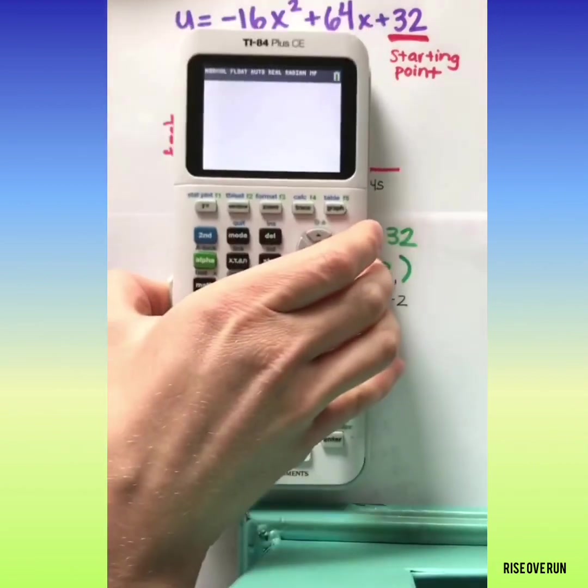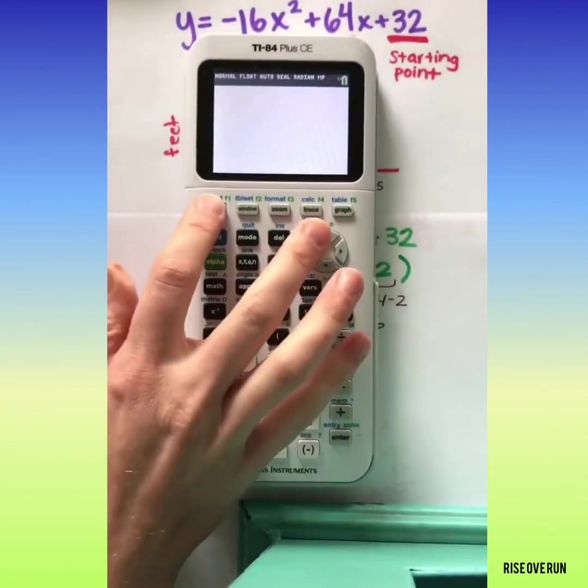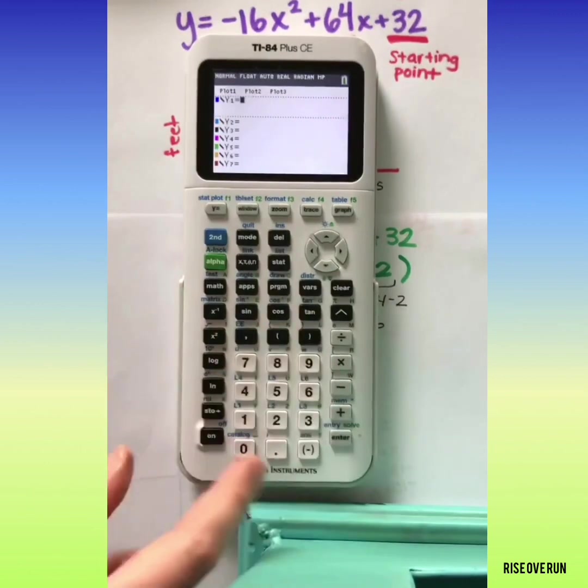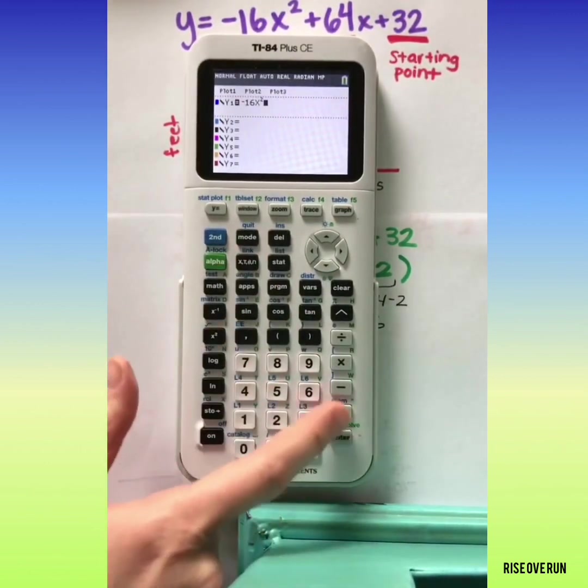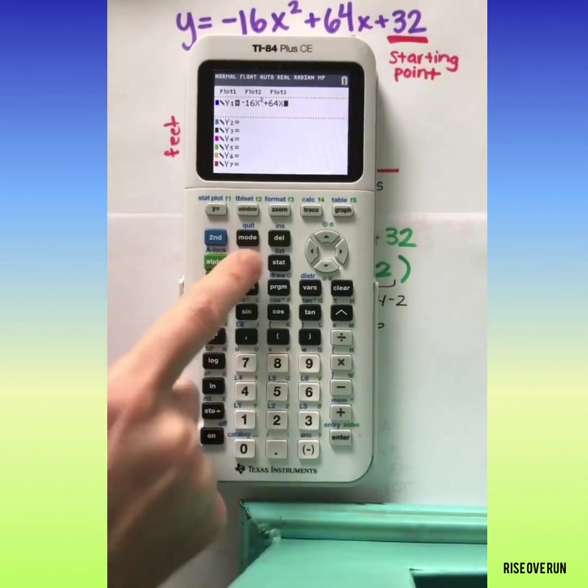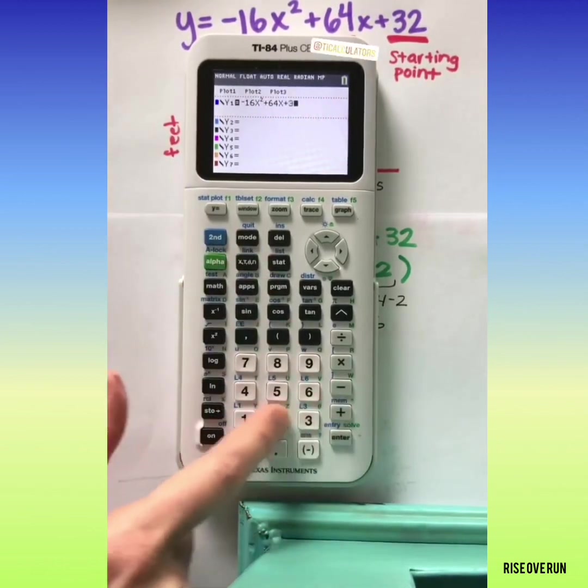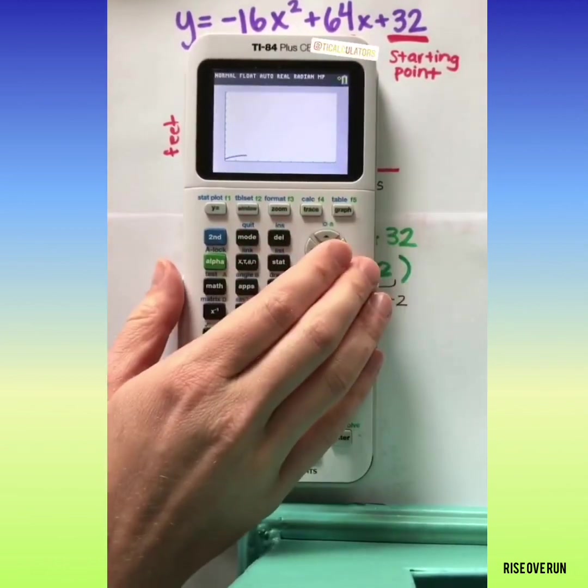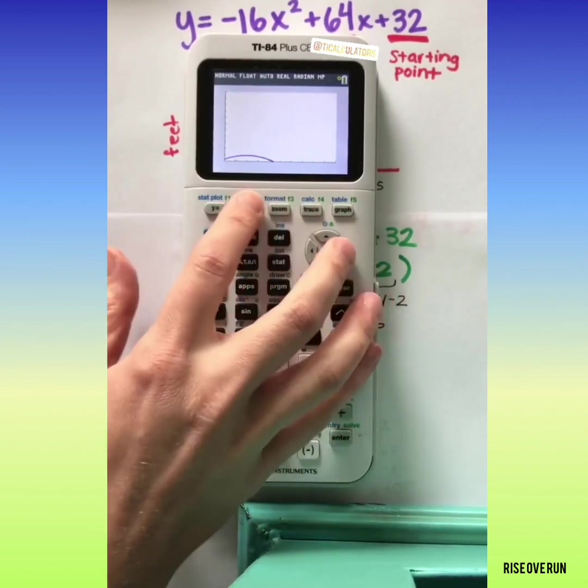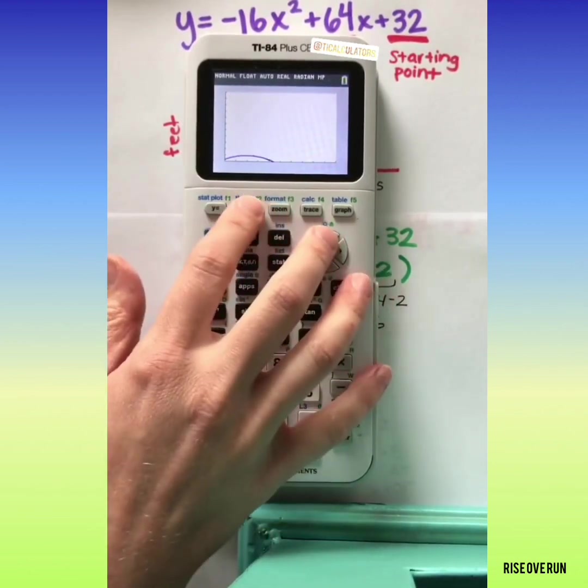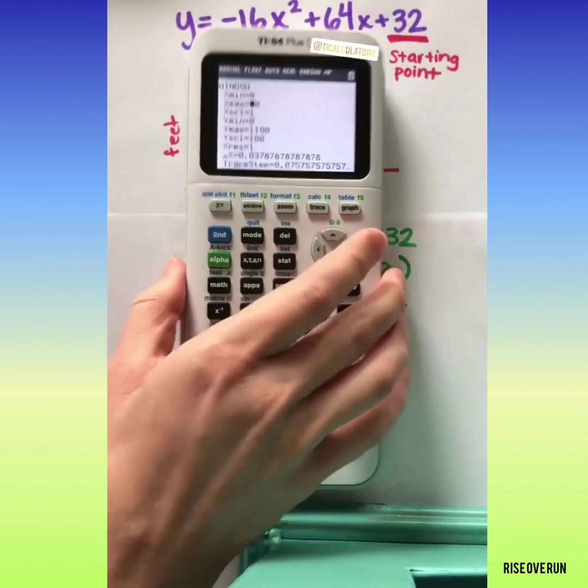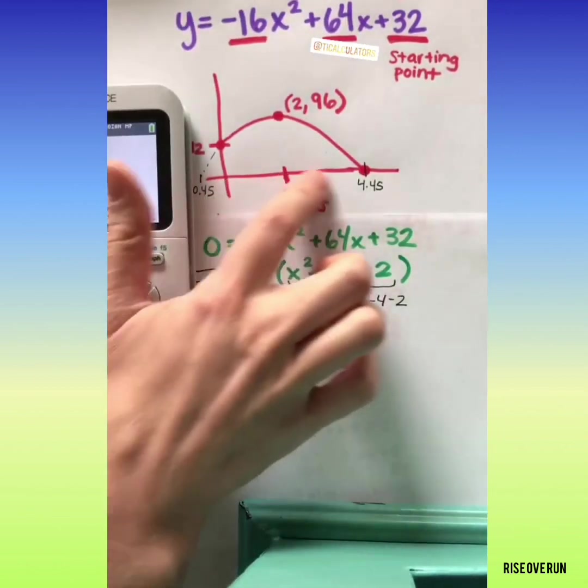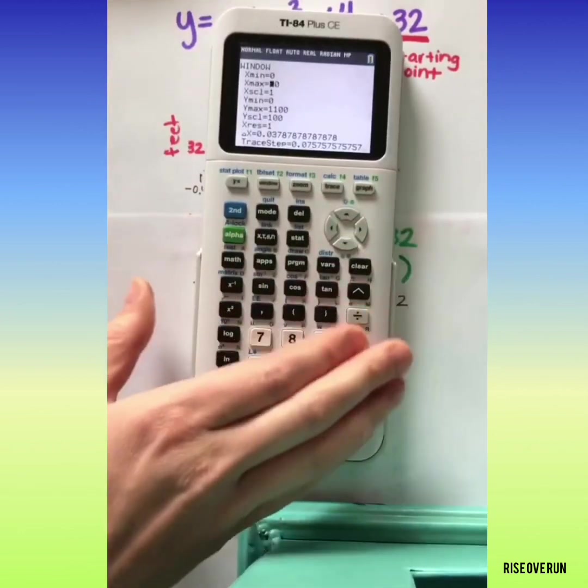Let's put the equation in the calculator to see how it could help us. Y equals negative 16x squared plus 64x plus 32. Let's see what our window is set at. For a maximum on the x-axis, let's make it only go to 6.